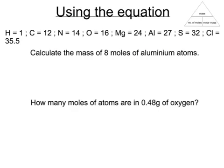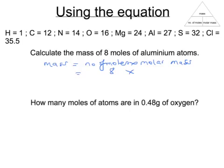I've parked that little triangle up in the top corner. In the first question we want to know the mass, so mass equals number of moles times molar mass. For the question about aluminium, the number of moles is 8 and the molar mass is 27 grams. The answer is 8 times 27, which is 216 grams.